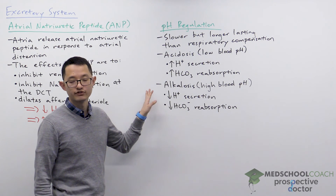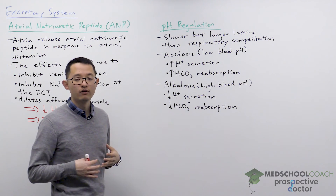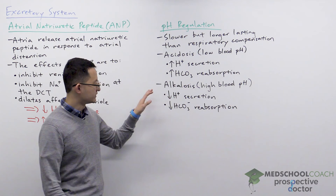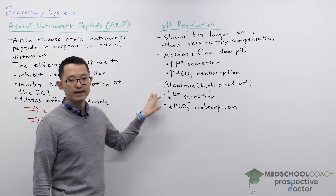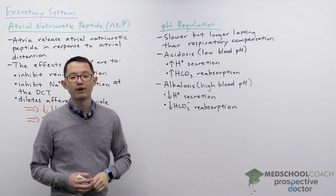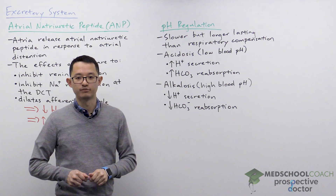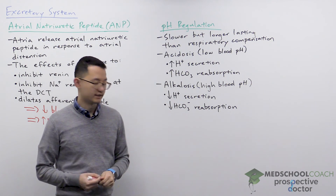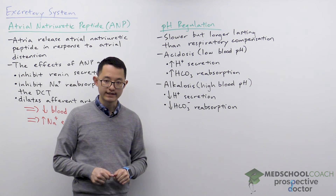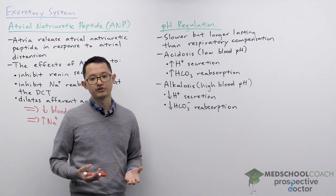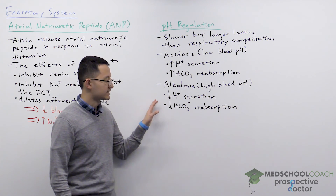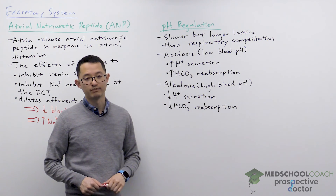Alkalosis is going to involve the opposite response. The kidneys will decrease H+ secretion and decrease bicarbonate reabsorption. This means more bicarbonate is going to be excreted, and this results in a decrease in blood pH.